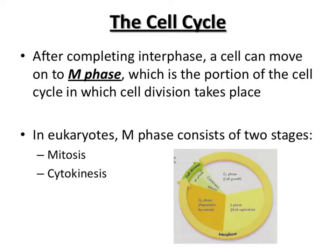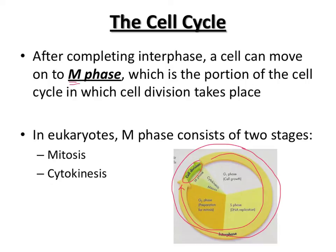After going through those three parts of interphase, we can go into M phase, where cell division actually takes place. You can see from the cell cycle diagram how much longer interphase is compared to cell division. M phase technically involves two things: the first is mitosis and the second is cytokinesis.